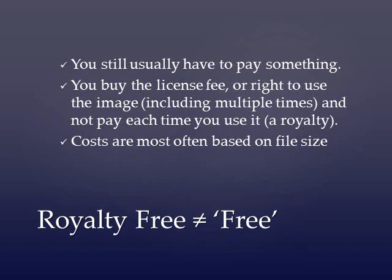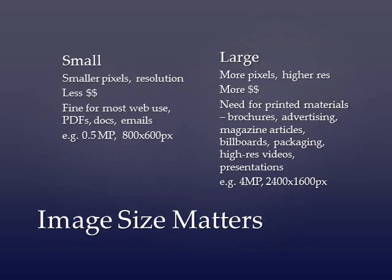Generally, the costs from a stock photo house are based on file size, so file size matters. Small images — meaning smaller pixels and lower resolution, for example a half-megapixel photo at 800 by 600 pixels — cost less money and are usually fine for web use, PDFs, documents, or email. You need larger photos with greater pixel count and higher resolution for printed materials, brochures, magazine articles, billboards, packaging, high-res videos, and large-scale presentations. So generally buy the smallest you can for basic web use, and buy the biggest, best image you can afford for everything else.